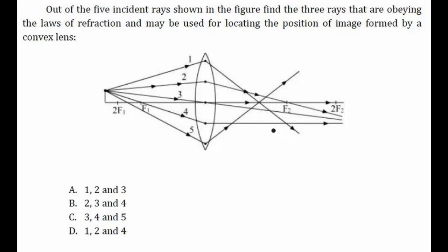This is a convex lens, so let's check each incident ray. The first incident ray is not parallel to the principal axis, and it is shown converging in an incorrect manner, so this ray is not correct.